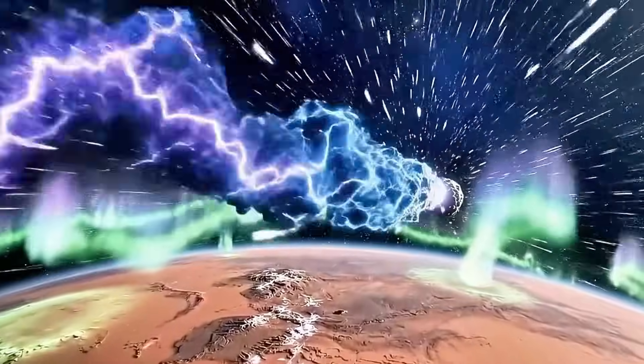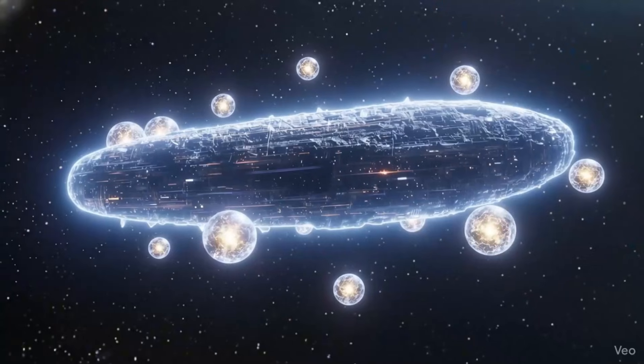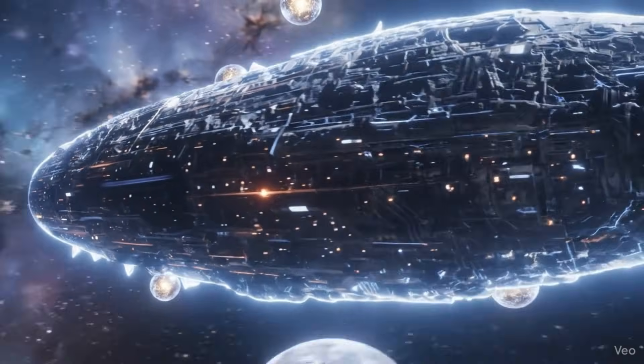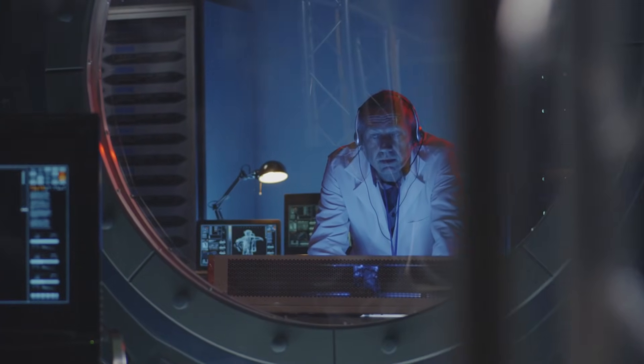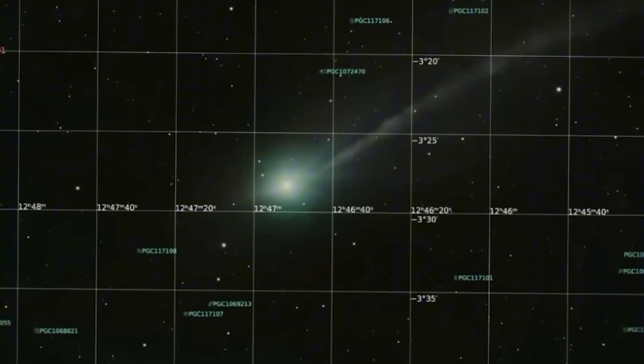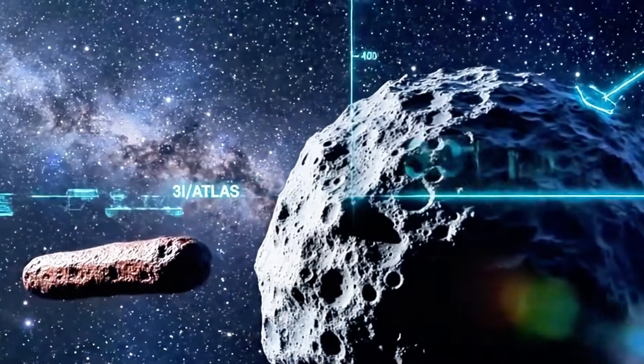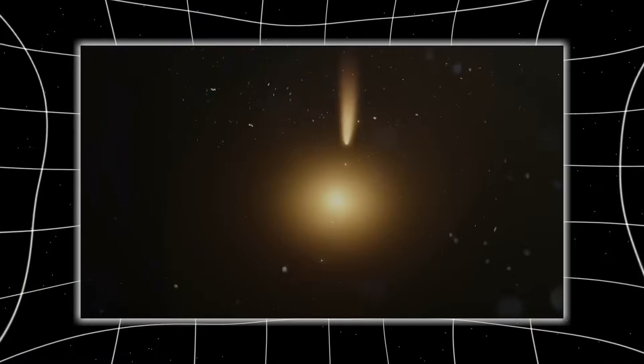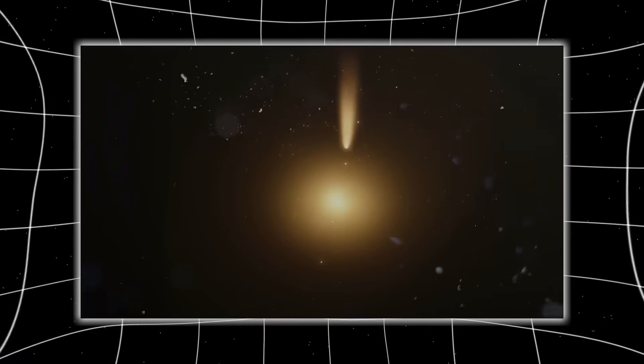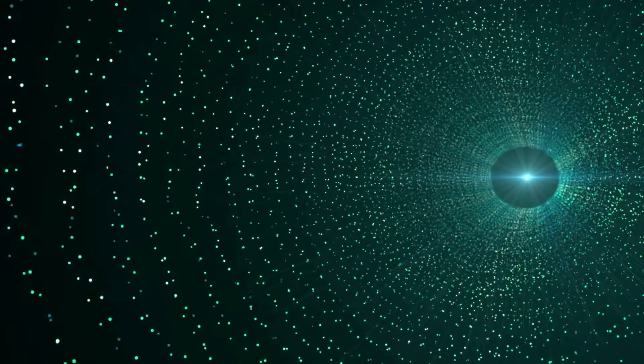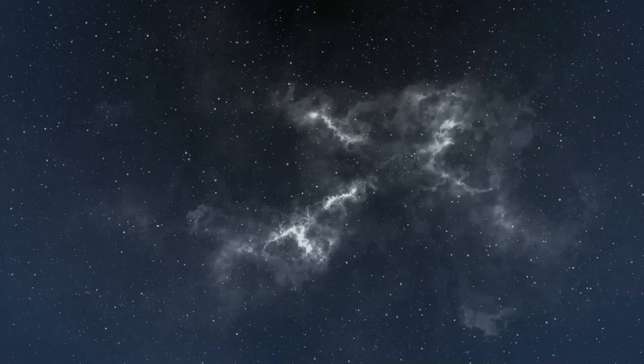Fourth, comparative analysis. Three confirmed interstellar objects now. Oumuamua, Borisov, 3i Atlas. What patterns emerge? What commonalities exist? What differences distinguish them? Statistical analysis requires data. Tonight provides unprecedented data set. Best observations ever obtained of interstellar visitor. Foundation for understanding entire population of objects traveling between stars.